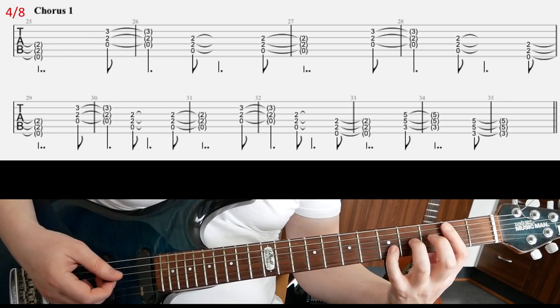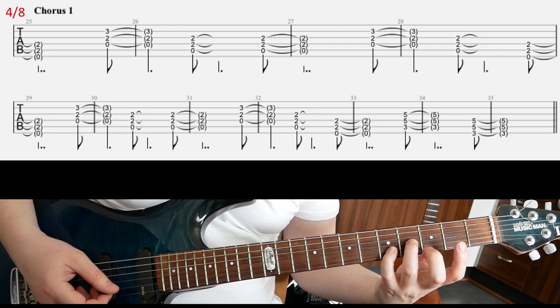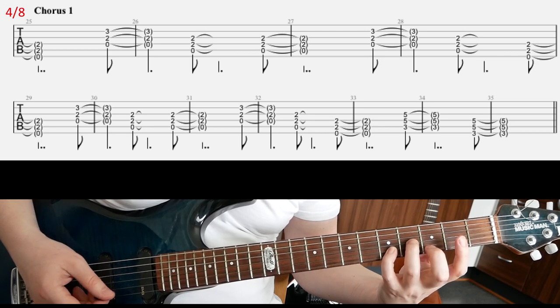And the same for the E power chord. You can also enrich it in the same way. You can add those two strings. In this case, fourth fret on G and fifth fret on B.